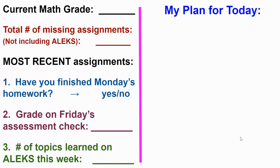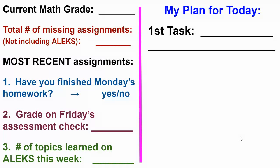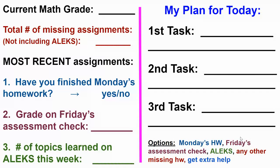Now let's talk about your plan for today. You're going to do one, two, or three things today — maybe more depending on your time. First, I want you to know what your first task is. I would suggest that if you haven't done Monday's homework or Friday's assessment check, do those first, then get some Alex done. Those top three — Monday's homework, Friday's assessment check, and Alex — should be your top priorities. Then identify your second and third tasks.